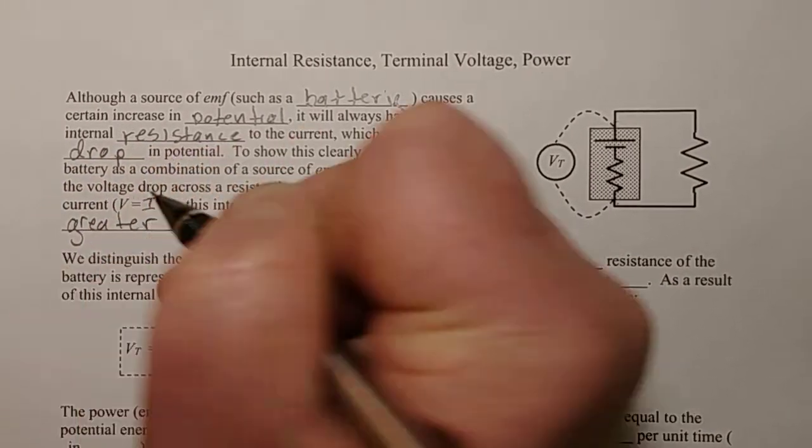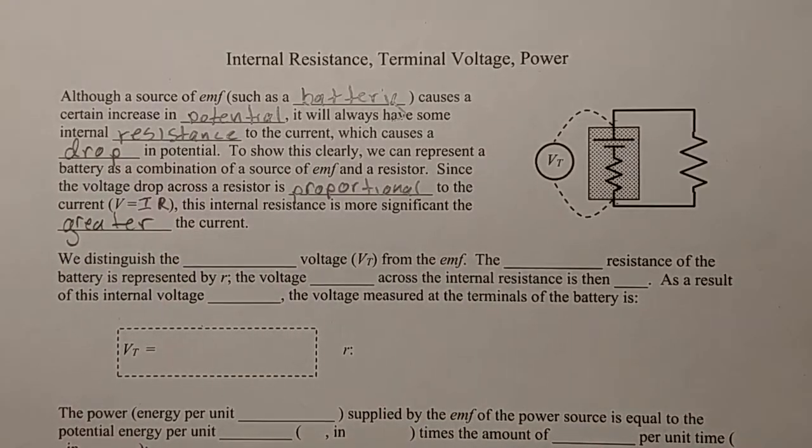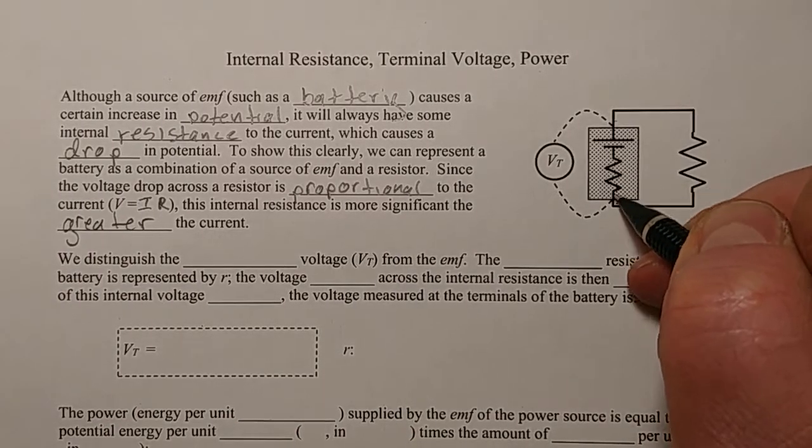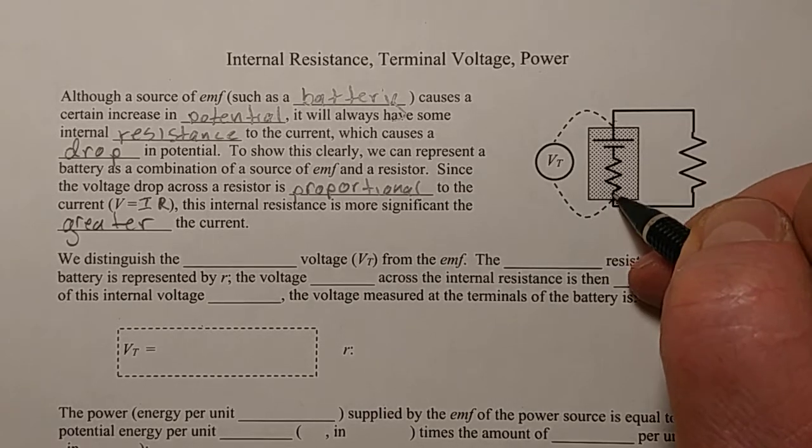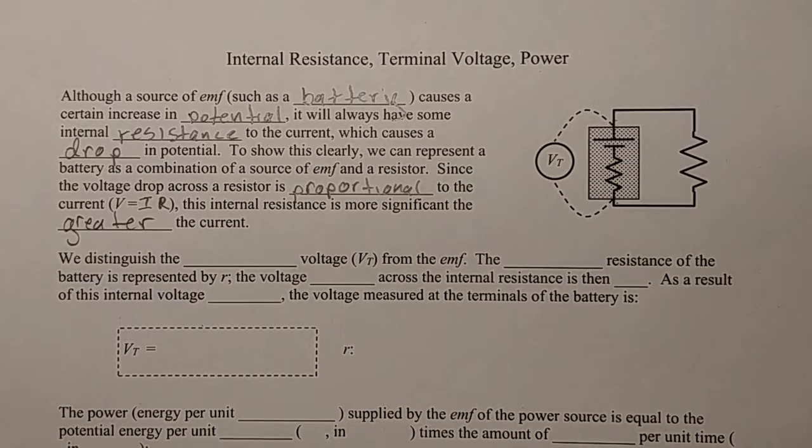So what this means, for example, is if you are running a little electronic device or a flashlight or something, generally this internal resistance will cause a very small drop in voltage because you won't notice because the drop in voltage will be very small compared to the EMF.